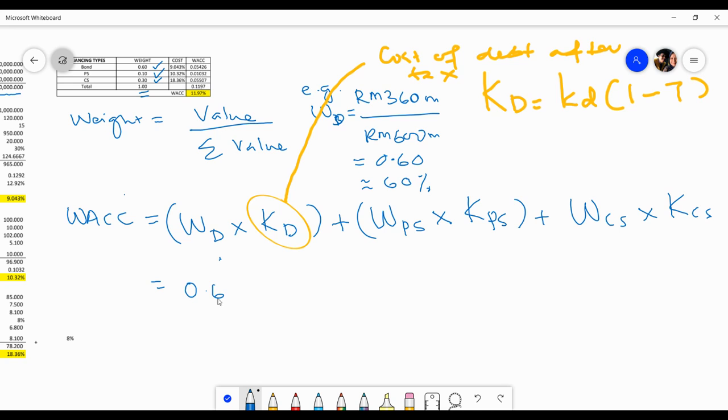0.6 times 9.043% plus 0.1 times 10.32% plus 0.3 times